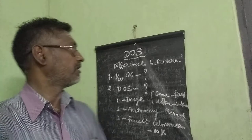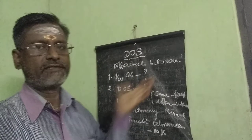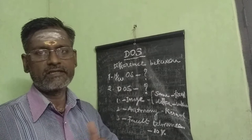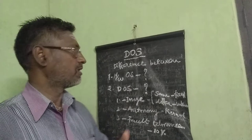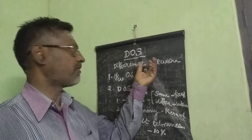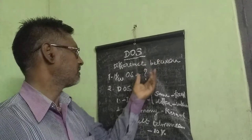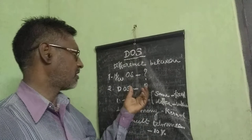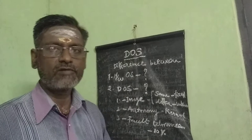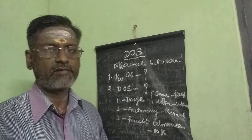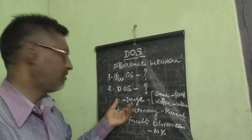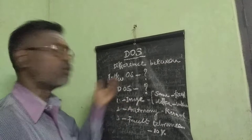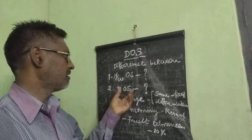Good morning to all. We will enter the Distributed Operating System. Already I told you what is Distribution and what is OS. There are two different types of OS available: Network OS and Distributed OS. What is the difference between Network OS and Distributed OS? There are three points that differentiate these two: Network OS and Distributed OS.